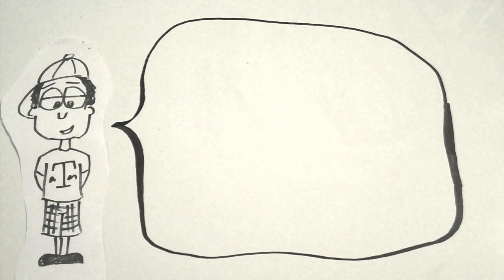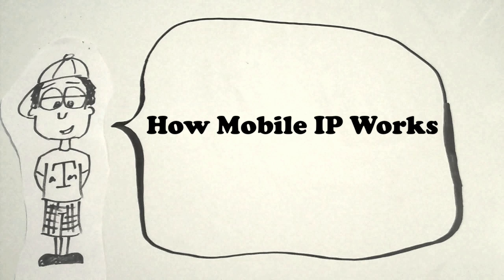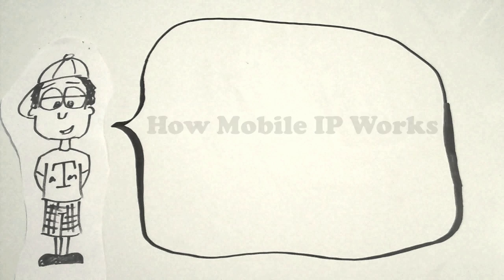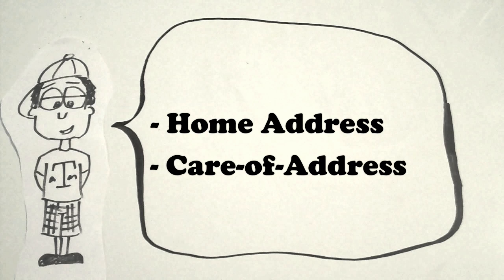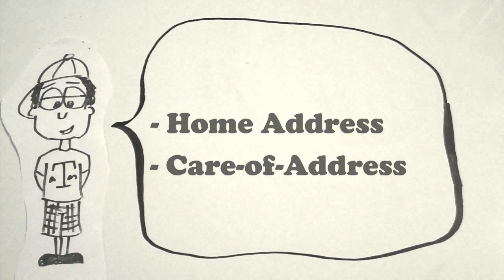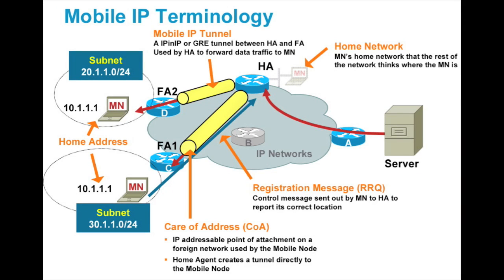Mobile IP was designed to resolve this problem. Mobile IP solves this problem by creating two IP addresses, called the home address and the care-of address. The home address is a permanent address for the mobile node and is used to identify TCP connections. The home address makes the mobile node appear logically connected to the original network.